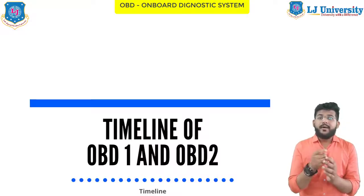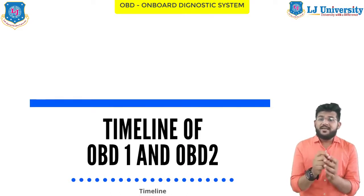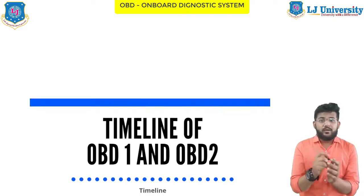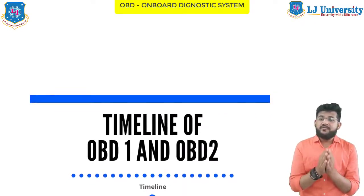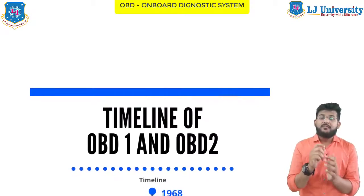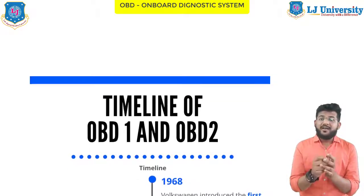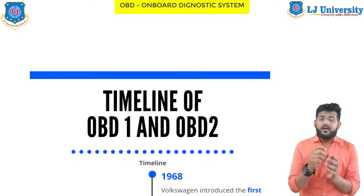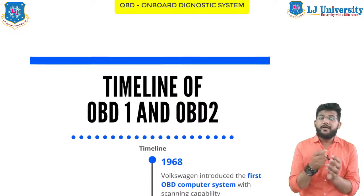Now let's see a brief history of OBD and OBD2. The history of OBD goes all the way back to the 1960s, when several organizations started discussing the necessity of on-board diagnosis to detect emission failures. The OBD system was first introduced in India in the year 2010, limited to light duty vehicles. As per the recent BS-6 mandate, all vehicle manufacturers post April 2020 are required to equip vehicles with the OBD-2 system.